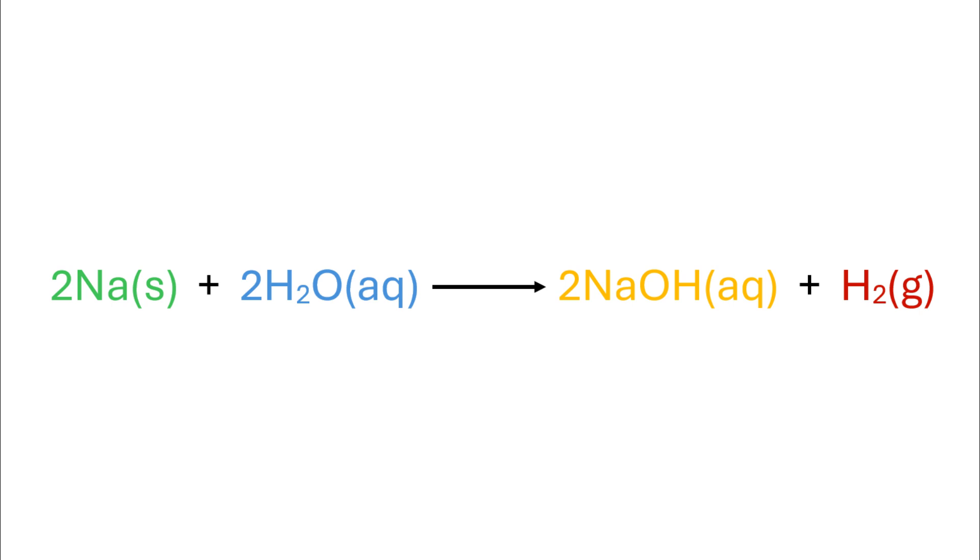In this reaction, the more reactive sodium metal displaces the less reactive hydrogen from water molecules to form its hydroxide. The free hydrogen atoms combine among themselves to produce molecular hydrogen, which is released in the form of hydrogen gas.